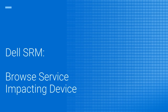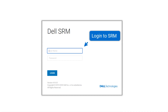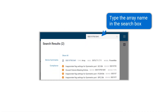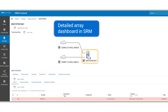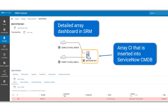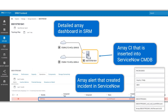Let's see the details of the affected Array in SRM. Login to SRM, type the Array name in the search box, and click on Search Results. The resulting dashboard shows Array FC topology and related performance, capacity, operations, components, and storage connectivity reports.